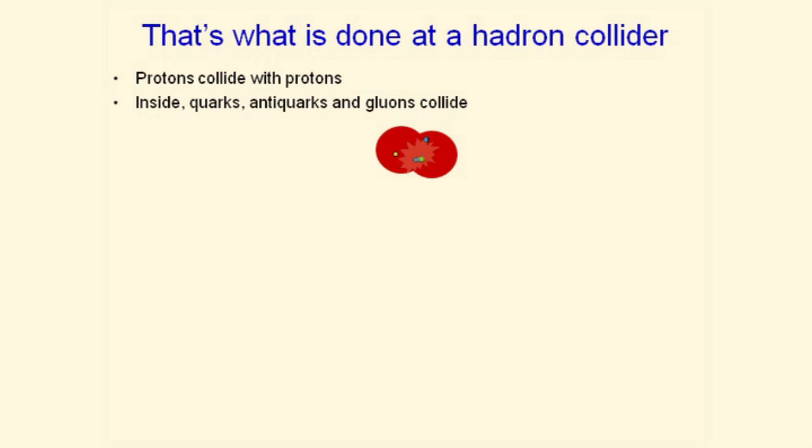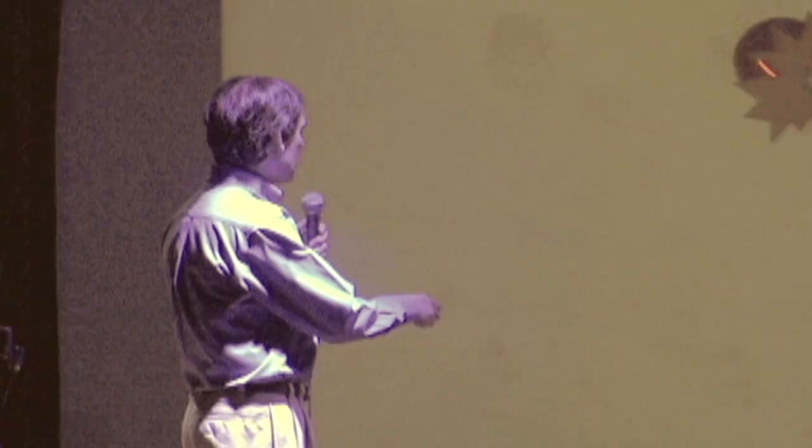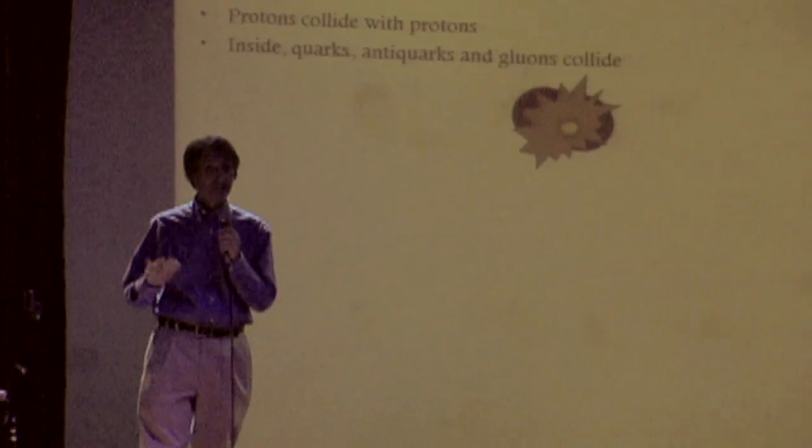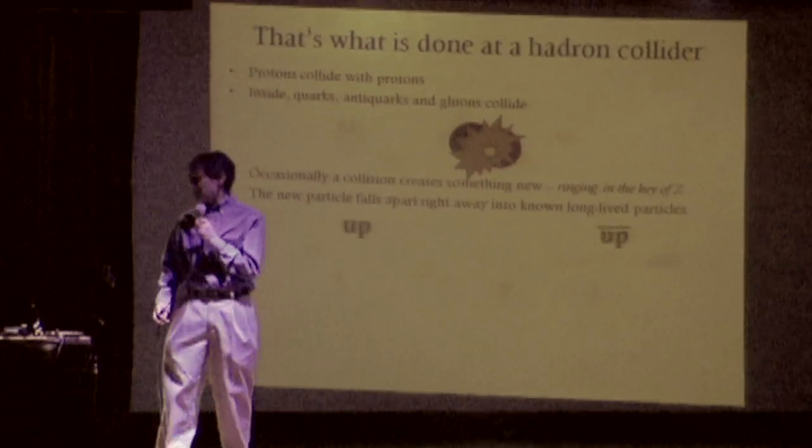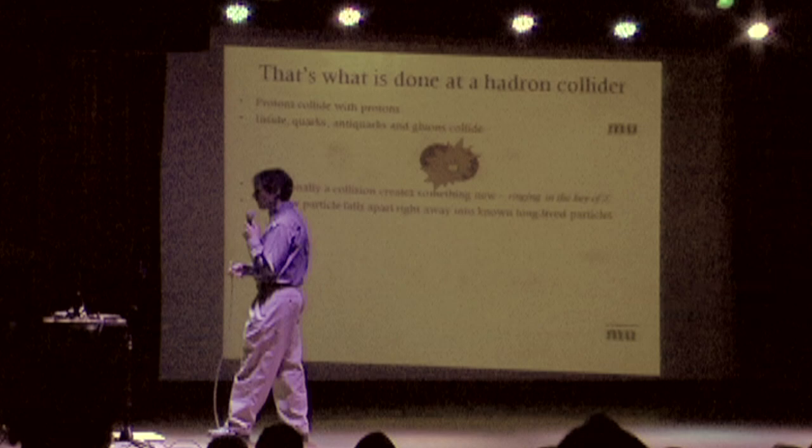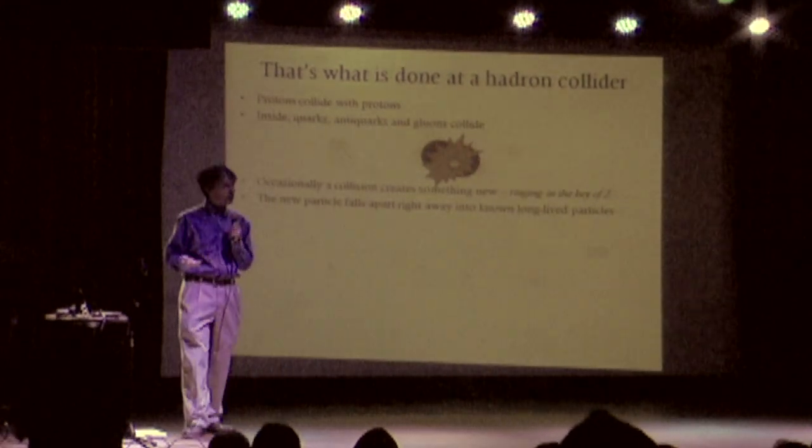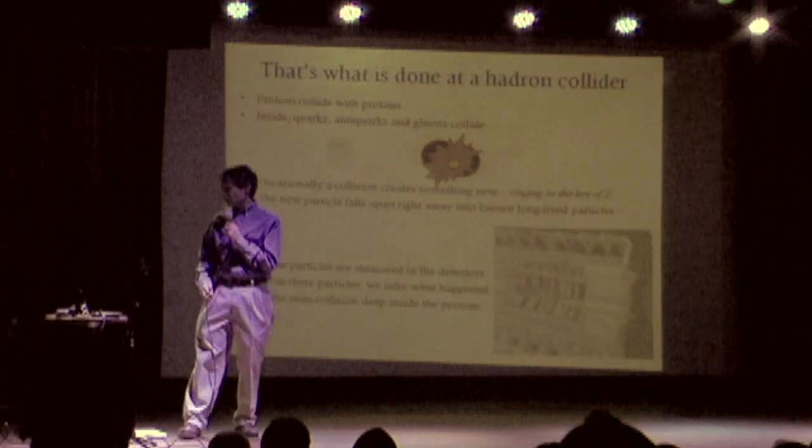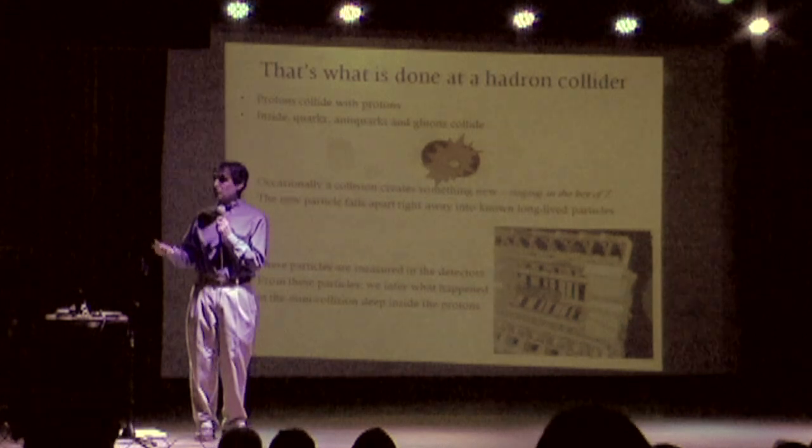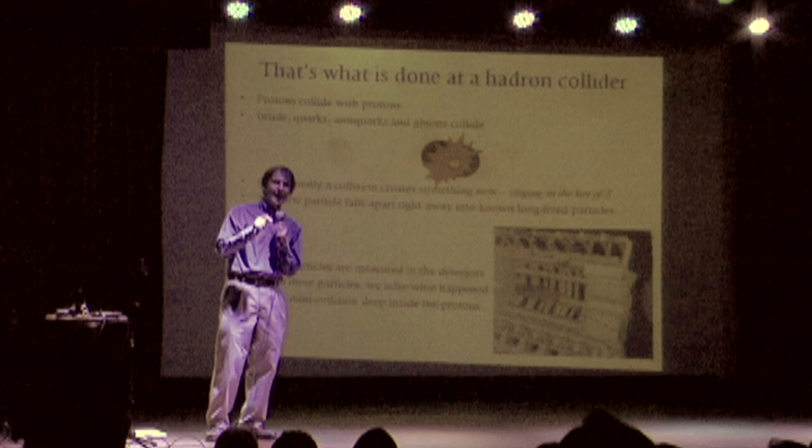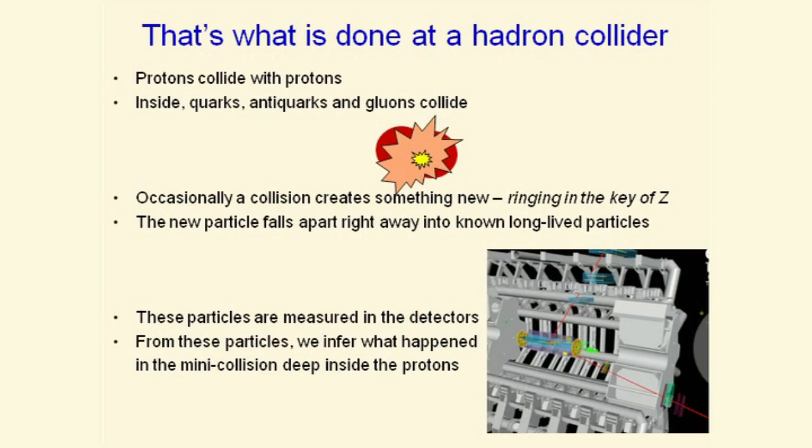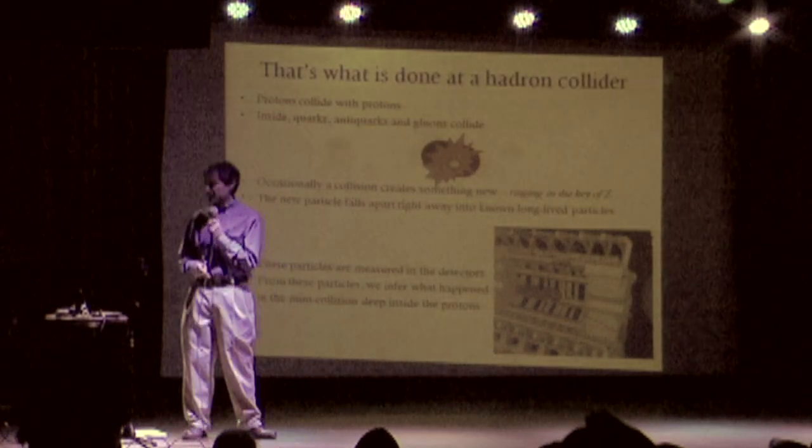Now this is maybe a good moment to stop and take stock of what I've told you, because I've really told you how hadron collider physics works, start to finish. You take protons, you get them to collide with each other, and you get those mini collisions where quarks and anti-quarks or gluons and gluons collide with each other. And it's those mini collisions which do something interesting. They can be used to make something new, to make the universe ring in a new note, like a Z particle, which then typically falls apart right away into particles that we know about, that live longer. And then those particles are actually measured in those detectors and used, their properties or their energies and their directions of motion are used to infer what happened deep inside that proton pair, right deep inside that proton-proton collision, what actually took place. And it's really pretty amazing that you can do this, but as you saw from the data I showed you earlier, it works. It really works.